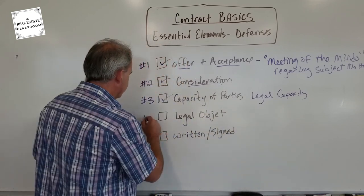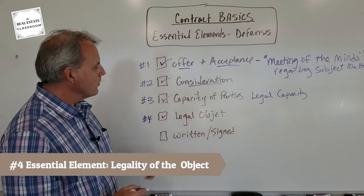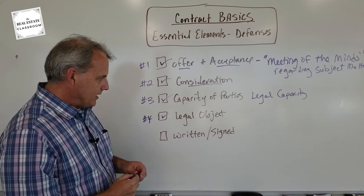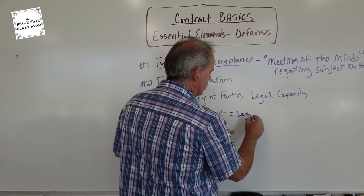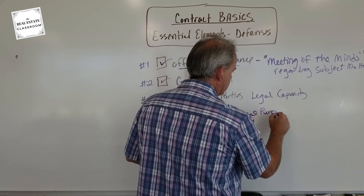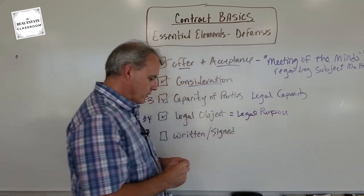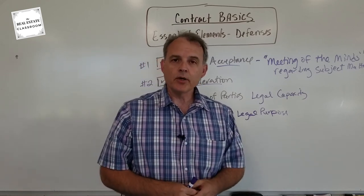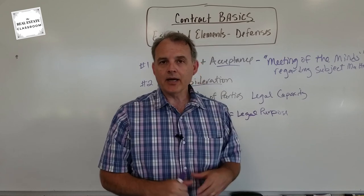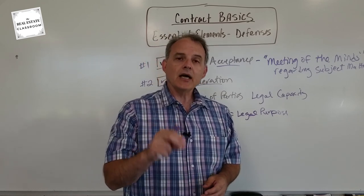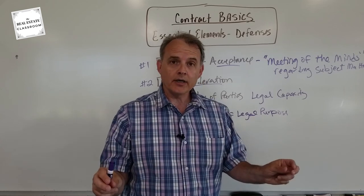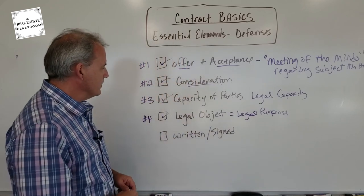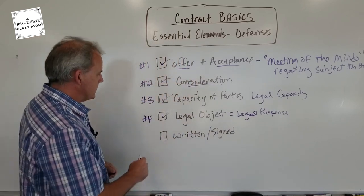Number four is a legal object, or what we call the legality of the object. It must be for a legal purpose. The contract must be for a legal purpose. Leasing out a property is for a legal purpose; selling or buying a house is for a legal purpose. If the contract is binding two parties to do any illegal act, it's not a legal contract — it would be missing one of the essential elements.